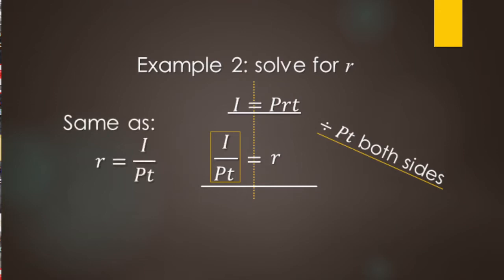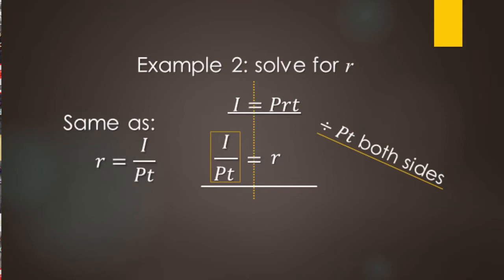We can also switch these around: we can write I over PT equals R, or R equals I over PT — you will see it both ways. This is useful for multiple-choice questions where you might solve it one way but the answer is written in the other form.